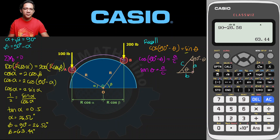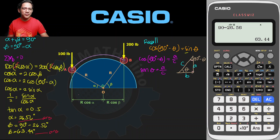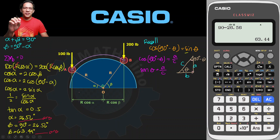These are our answers: alpha equals 26.56 degrees and beta equals 63.44 degrees. If you are only interested in this basic solution, you may stop watching. But those who wish to dig deeper into this problem, continue watching — this approach is very powerful.